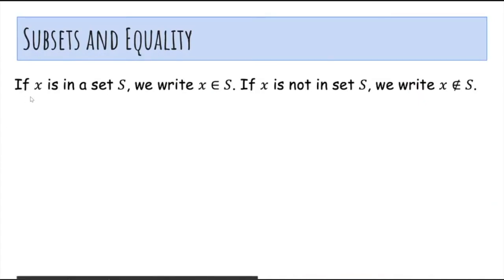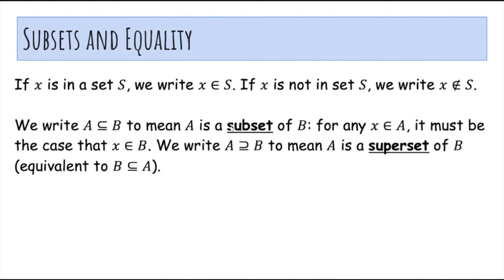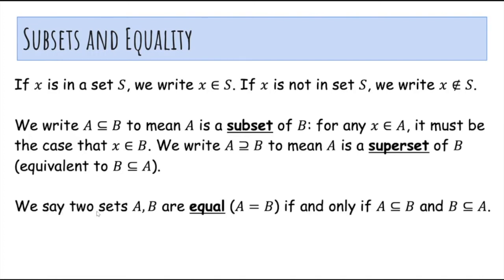Now let's talk about subsets and equality. If x is in a set S, we use this symbol to write x is an element of S. If x is not in S, we use this symbol to write x is not an element of S. We write this symbol to mean that A is a subset of B — for any x that's an element of A, it must also be an element of B. The reverse symbol means A is a superset of B, which is equivalent to B is a subset of A. Two sets A and B are equal if and only if A is a subset of B and B is a subset of A — you have to show both directions.